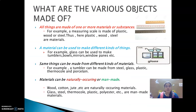What are the various objects made of? All things are made of one or more materials or substances. For example, a measuring scale is made of plastic, wood or steel, isn't it? Thus here plastic, wood, steel are materials. If you take another example like fried rice — fried rice is made of rice, water, vegetables, spices, etc. Here rice, water, spices, vegetables are nothing but materials.